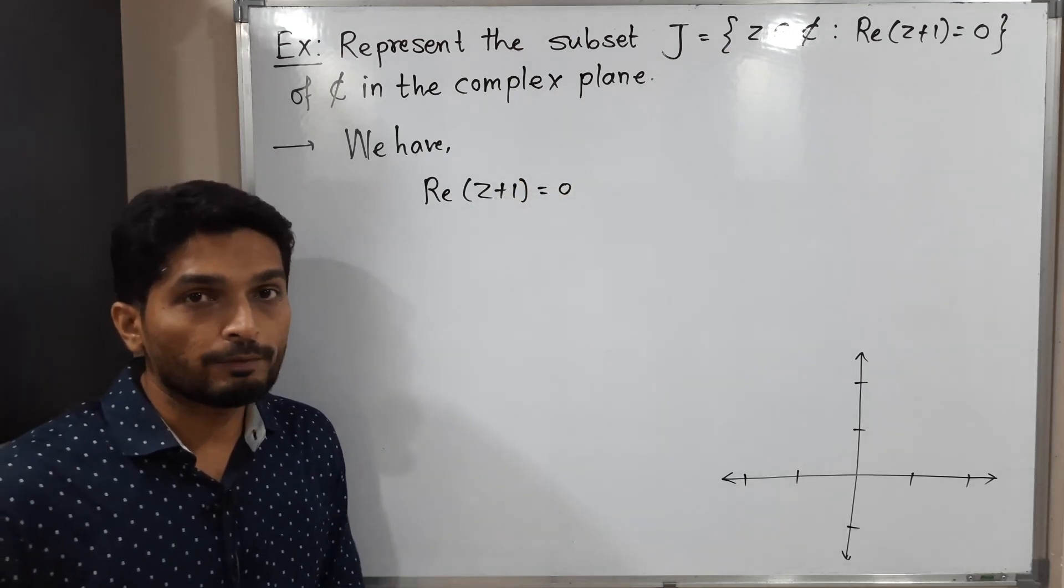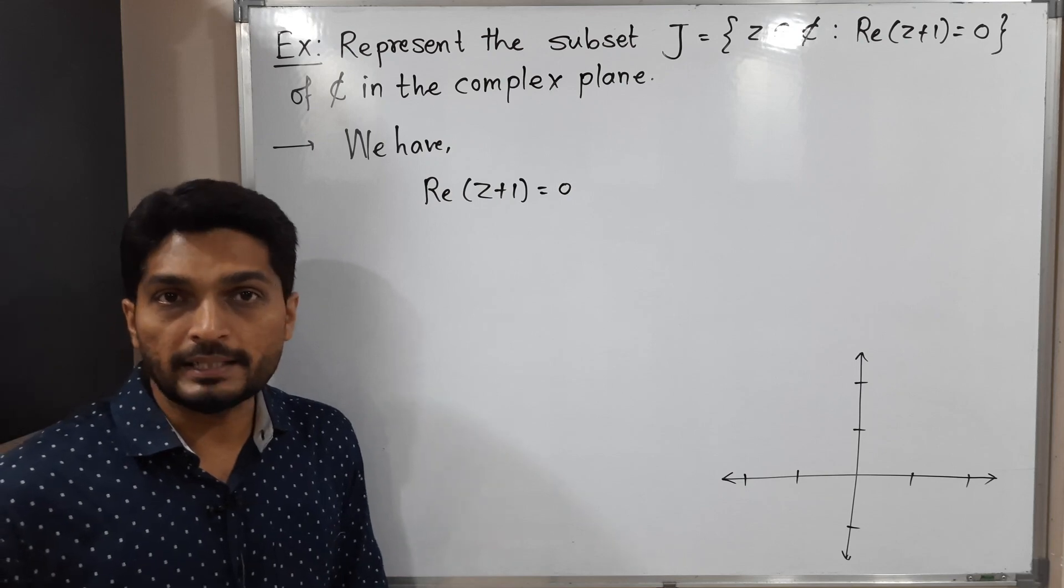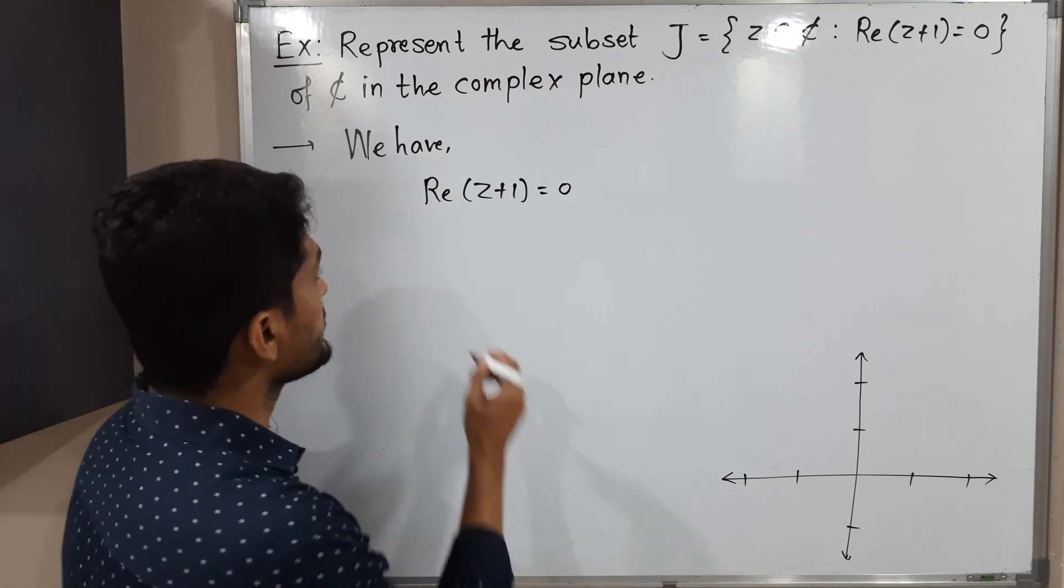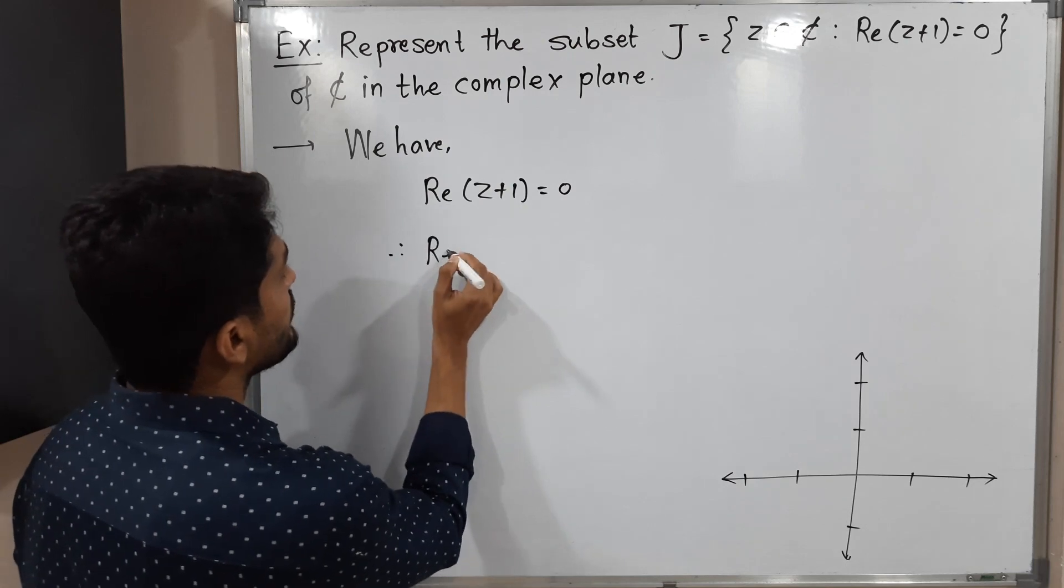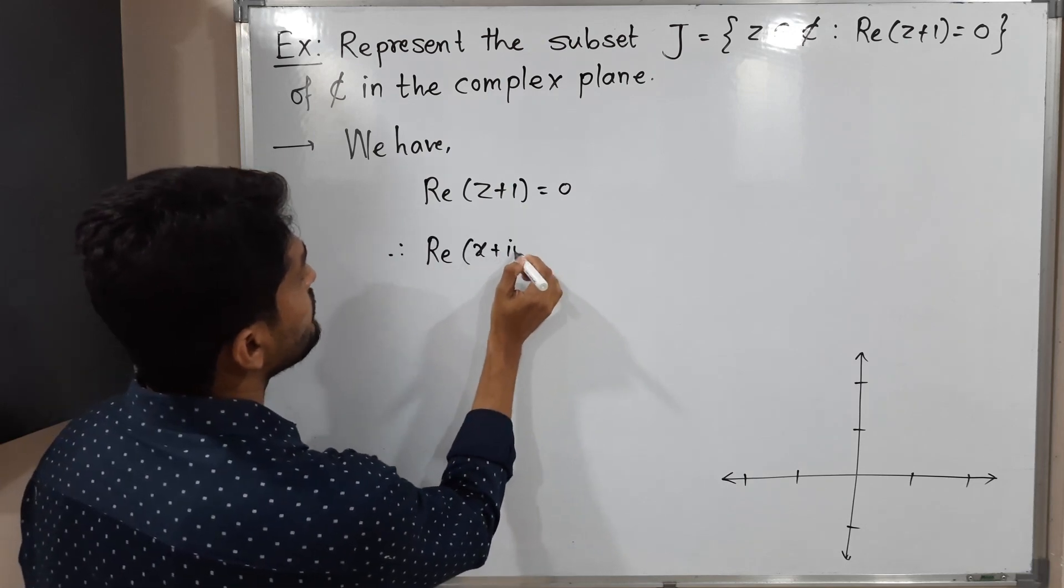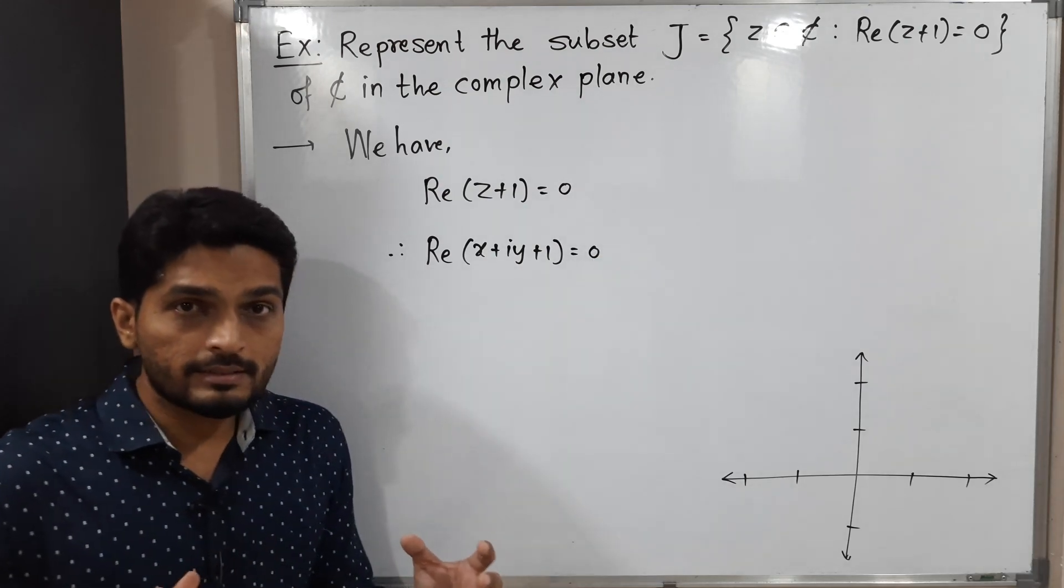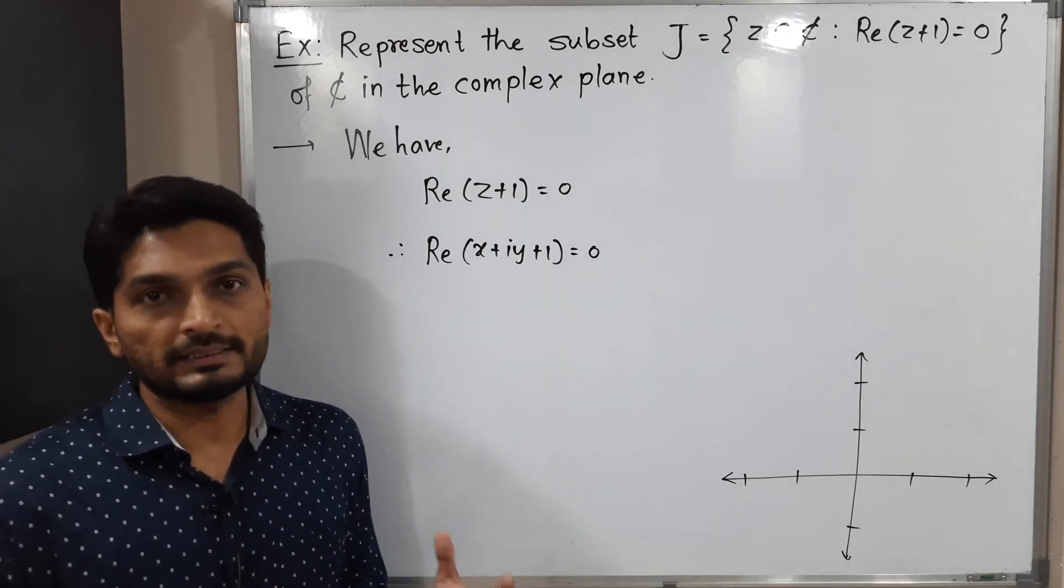When we solve such problems, what we do? We replace Z by its Cartesian form which is X plus IY. So let us replace Z by X plus IY. Real part of X plus IY plus one equals zero. Let us collect real part and imaginary part.